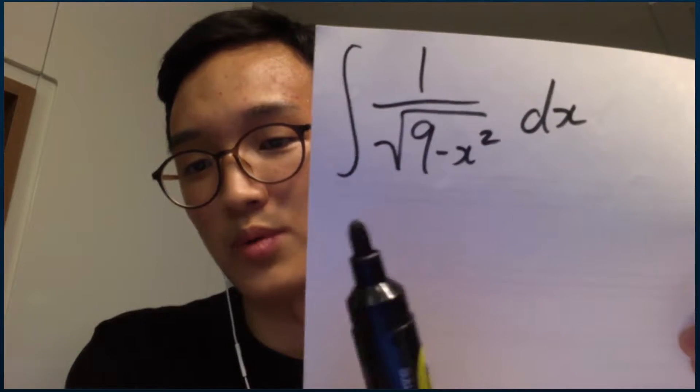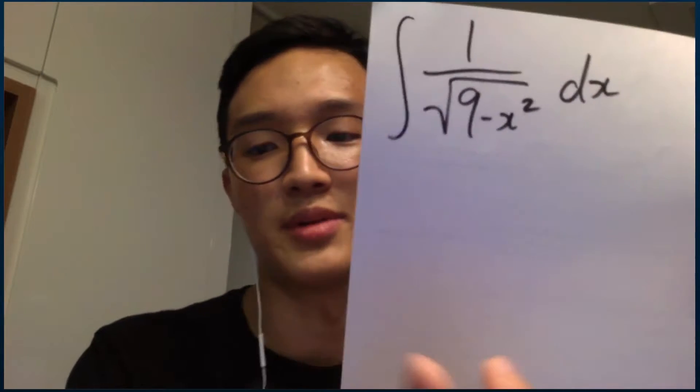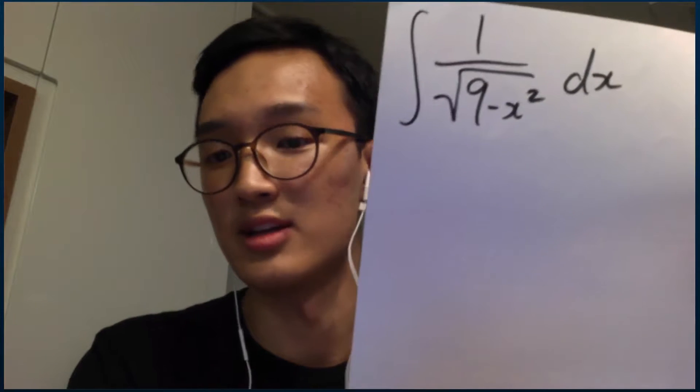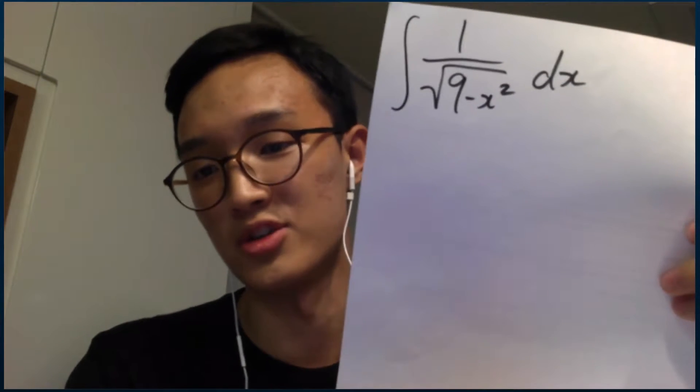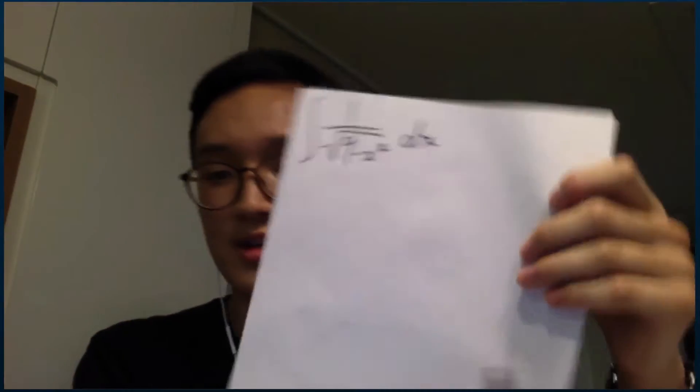If you look at the square root of 9 minus x squared, it looks a little bit like the distance formula, so we can deduce that we might be able to draw a triangle with side lengths that will help us solve this, and this is what the triangle would look like.